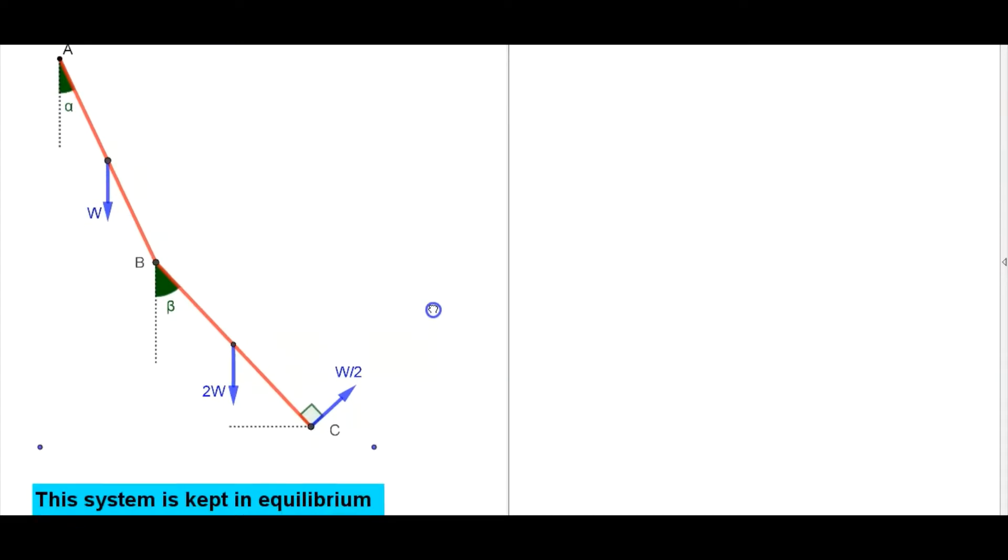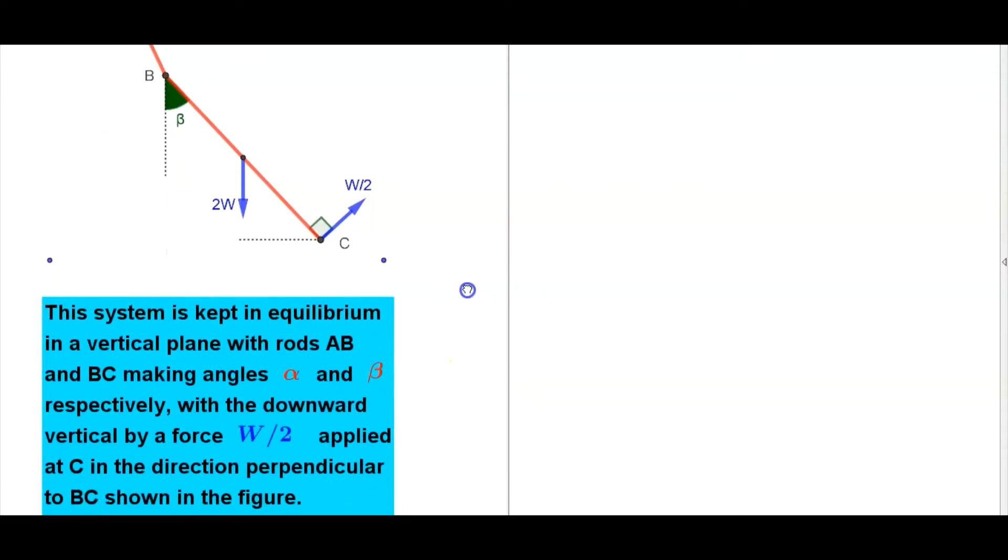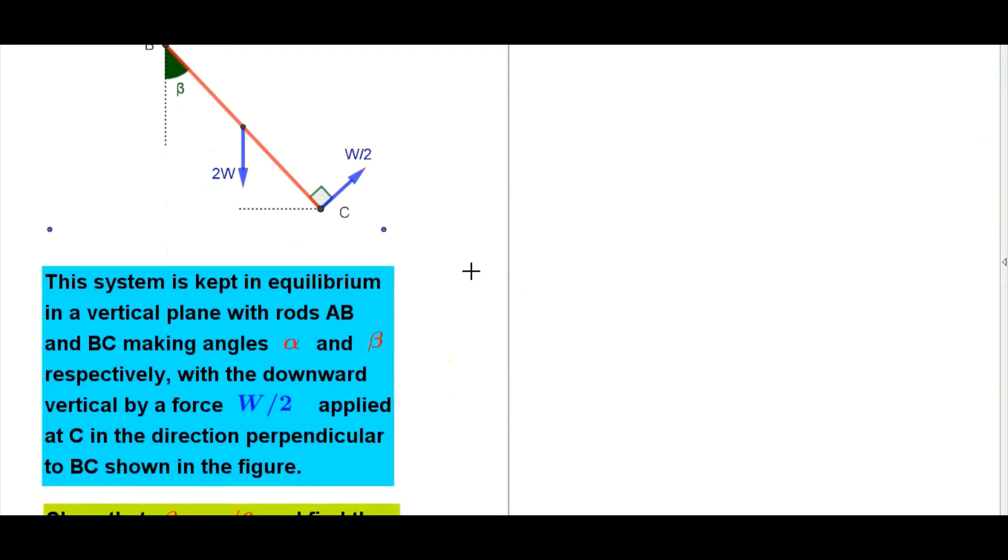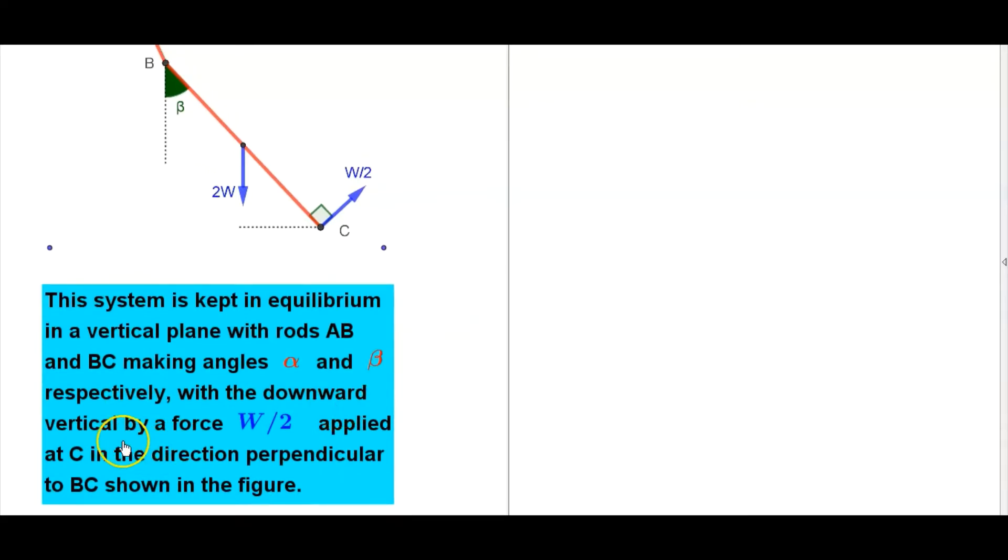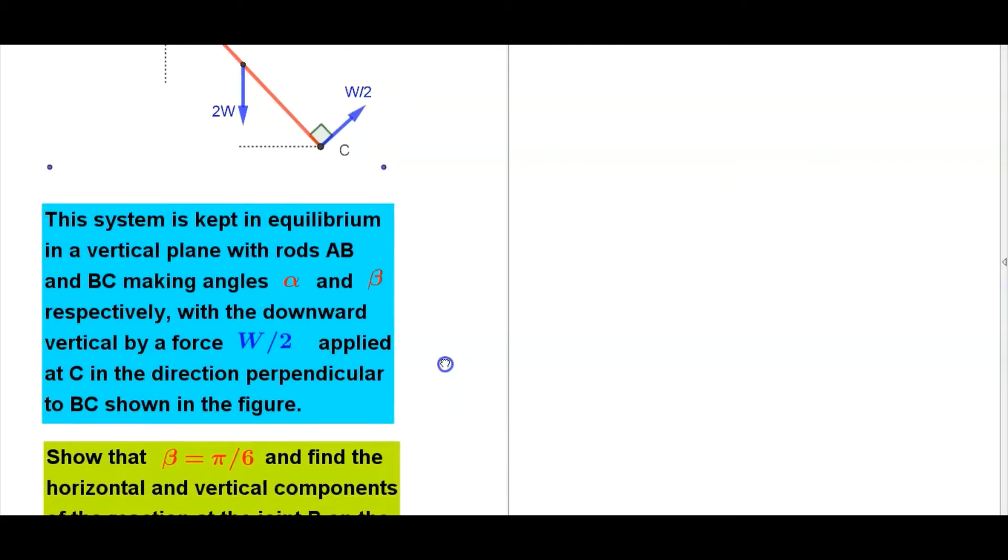This system is kept in equilibrium in a vertical plane with rods AB and BC making angles alpha and beta respectively with a downward vertical by a force W/2 applied at C in the direction perpendicular to BC shown in the figure.